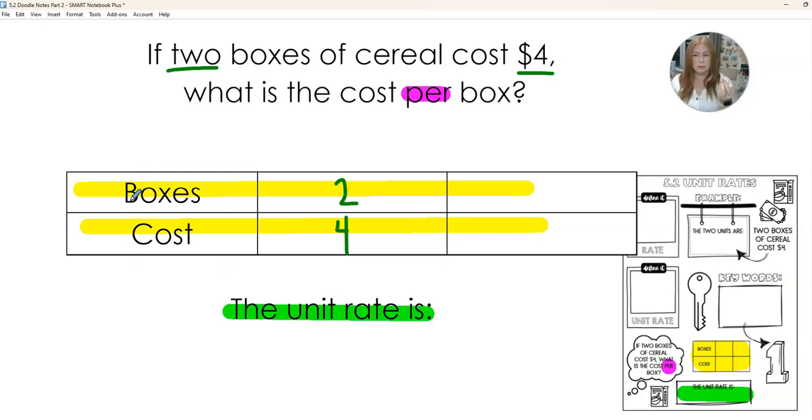The label is not super important what you call it. You could call this cereal, you could call it boxes, you could call this cost, you could call it money or dollars, but it has to have a label so that everything in that category goes in that same line.